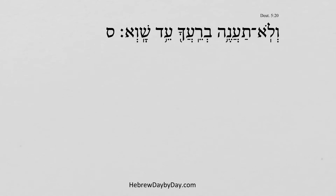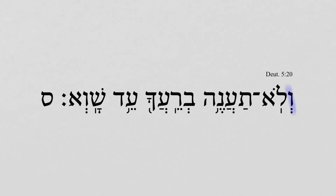Deuteronomy 5:20 — V'lo ta'aneh v're'cha ed shav'eh. We continue with the Ninth Commandment: and you shall not answer against your neighbor a worthless testimony.